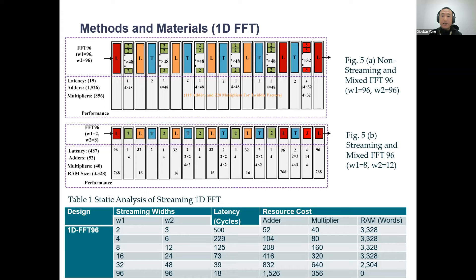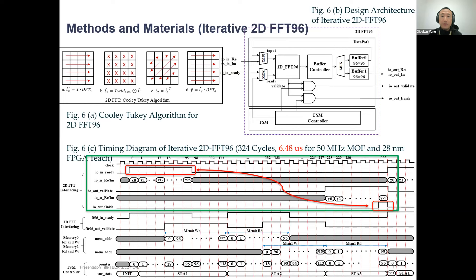Here is the one-dimensional FFT design. Instead of a single design structure, we propose many different design options with different streaming widths. If the streaming width is larger, we get higher throughput but a larger area. If the streaming width is smaller, we get a smaller chip area but less throughput. It depends on the design application and specifications. In Table 1 we show the latency and resource cost for different streaming widths.